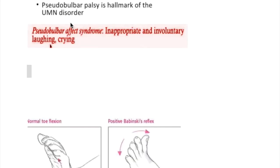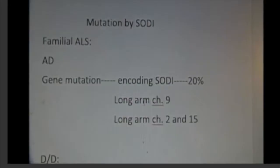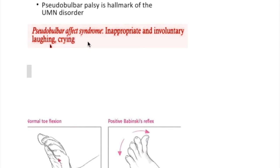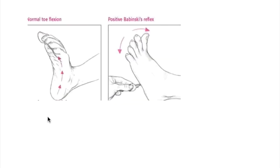Pseudobulbar palsy is the hallmark of the upper motor neuron lesion. Pseudobulbar affect syndrome involves inappropriate and involuntary laughing, crying, and weeping. The Babinski sign: a negative Babinski sign is present in normal people and shows plantar flexion of the toes. A positive Babinski sign is a feature of upper motor neuron lesion and shows fanning of the toes and dorsiflexion of the big toe.